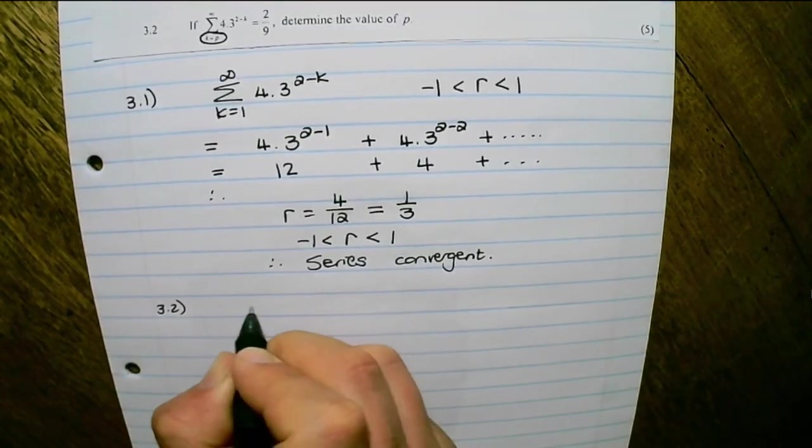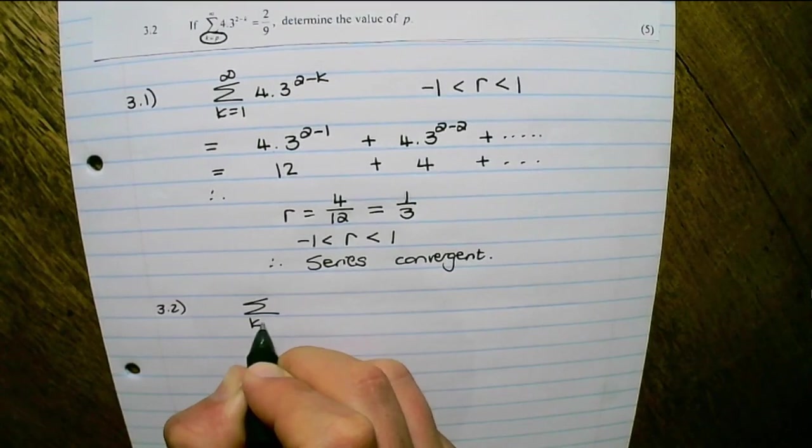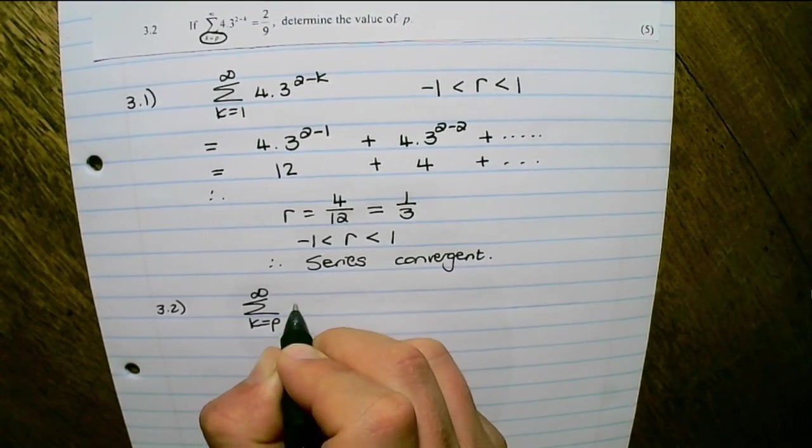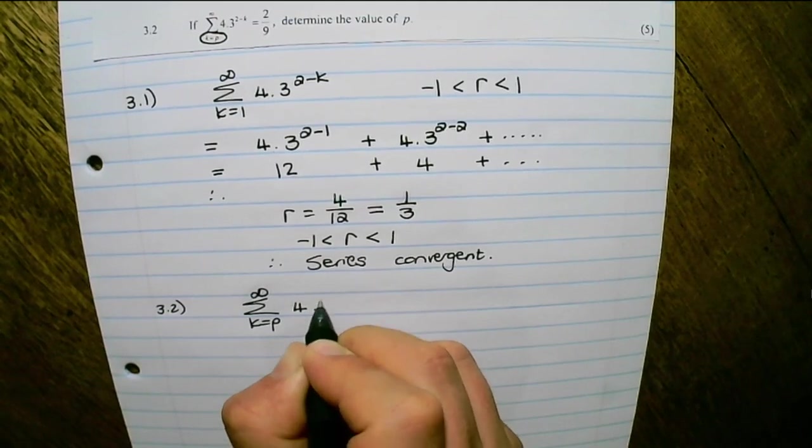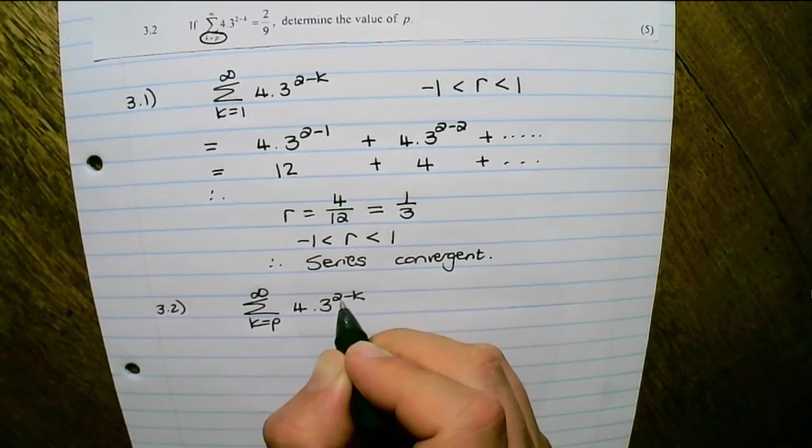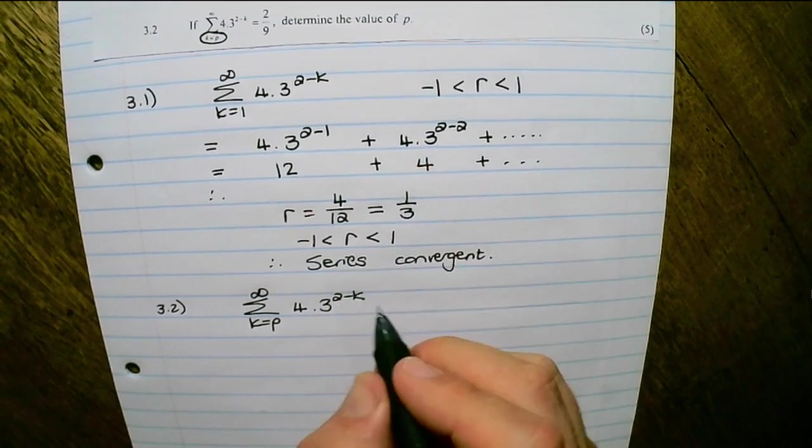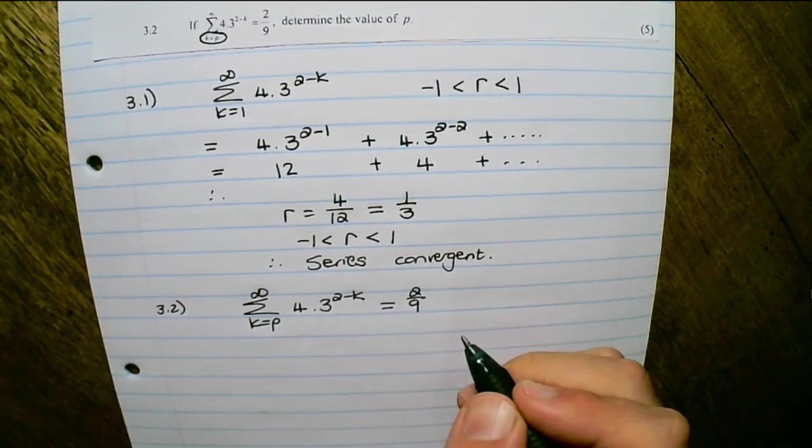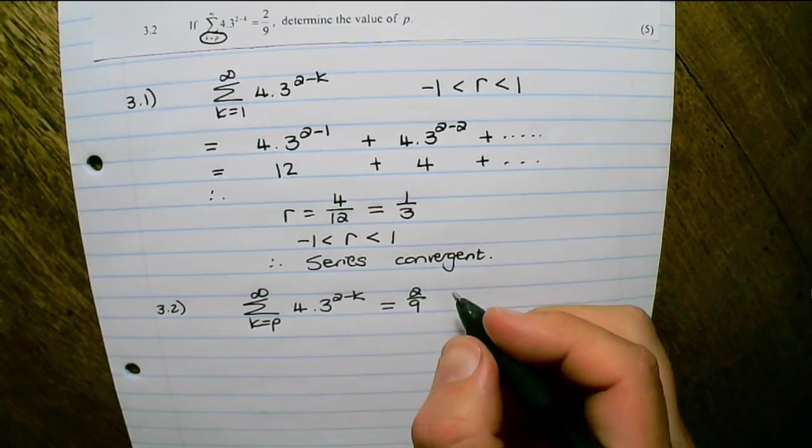3.2 says, if k equals p, and this pattern goes on infinitely, and we have the contents of 4 times 3 to the power of 2 minus k, as we had in the previous question, and this equals 2 over 9, find the value of p.